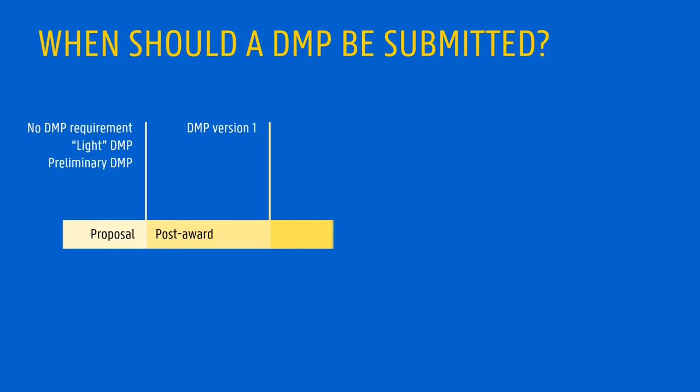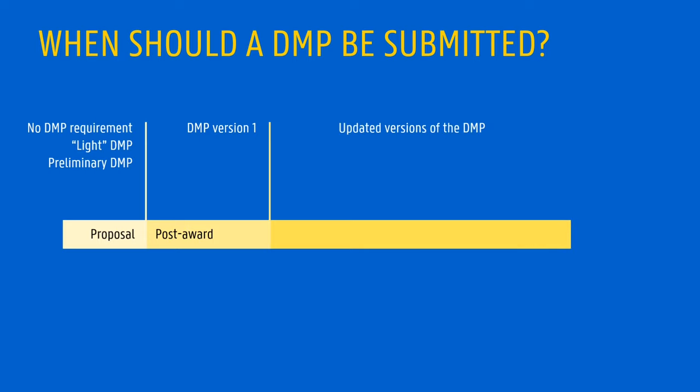But things can change over the course of the project, or maybe certain things were not known at the beginning. That is why you are supposed to keep your DMP up to date throughout the course of the project. In some cases, updated versions might be a deliverable with a specific deadline.